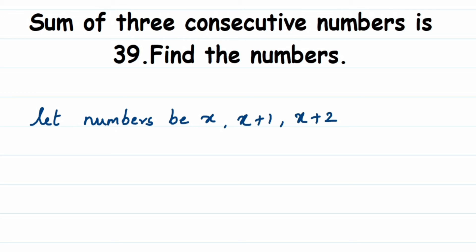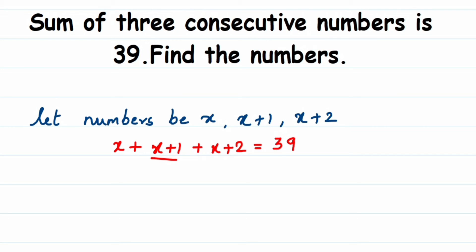In this question, they have given that the sum of the three consecutive numbers is 39, so let me add them. We're going to get a linear equation in one variable. Adding all three: first number is x, second number is x plus one, and third number is x plus two. Adding all three equals 39.